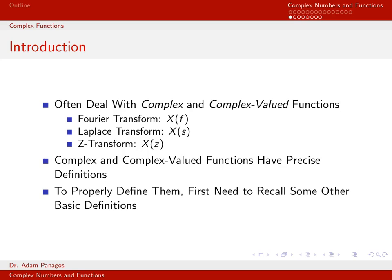In the last few videos we've been dealing with complex numbers. Let's now turn our attention to complex and complex-valued functions. As a specific example, in electrical engineering we often deal with something called the Fourier transform, which we denote x of f. The Fourier transform x of f is just the Fourier transform of the continuous time signal x of t, and this function of f is a complex-valued function.